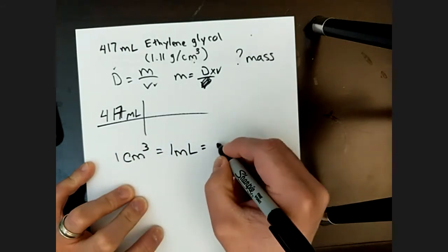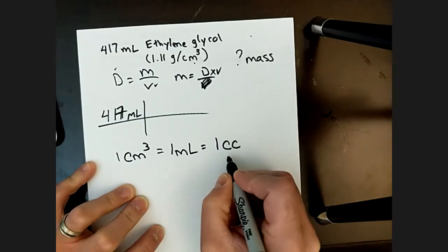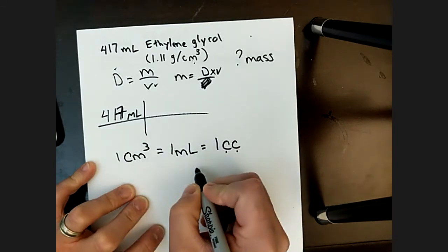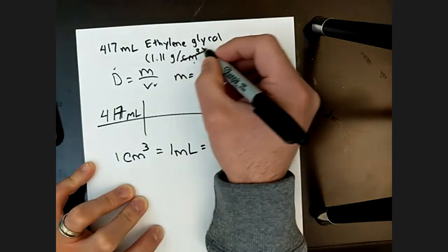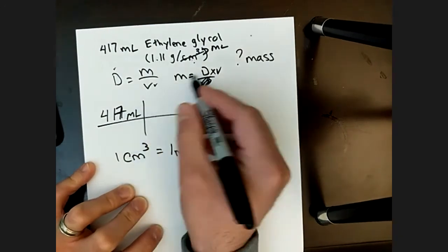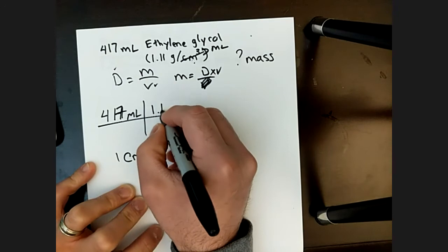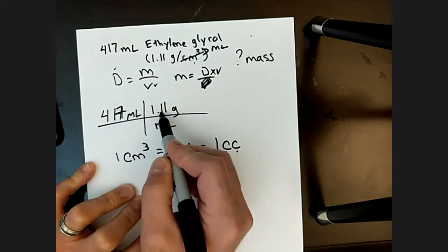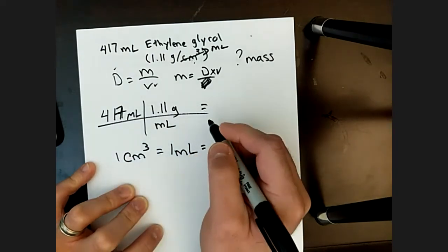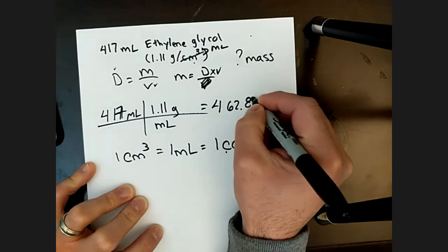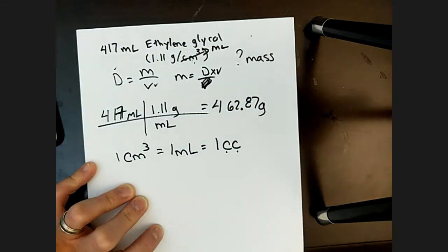In medical terms, if we're looking at a cubic centimeter, it is a cubic centimeter or a milliliter. So I can basically convert this directly to milliliters instead of it being centimeters cubed. The density unit then would be 1.11 grams per milliliter, and I end up with my volume times my density, which then gives me 462.87 grams of ethylene glycol.